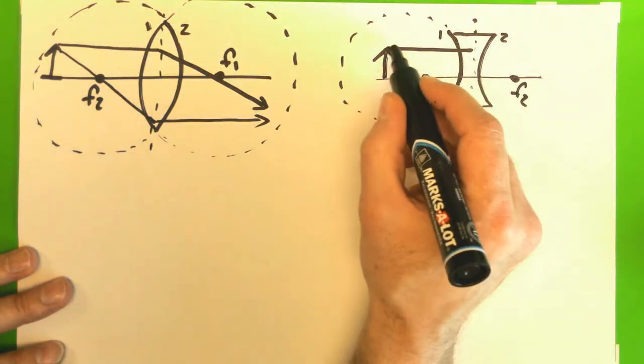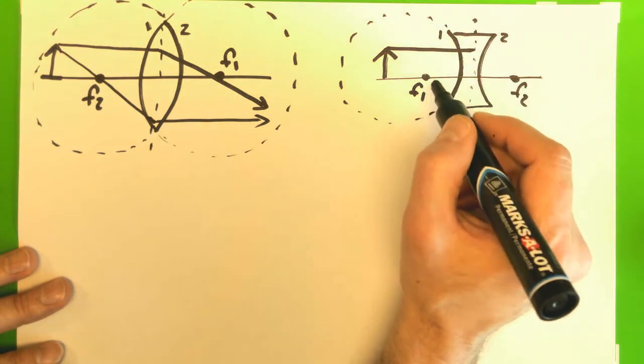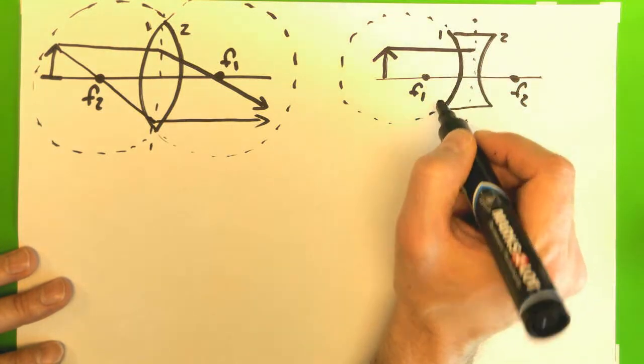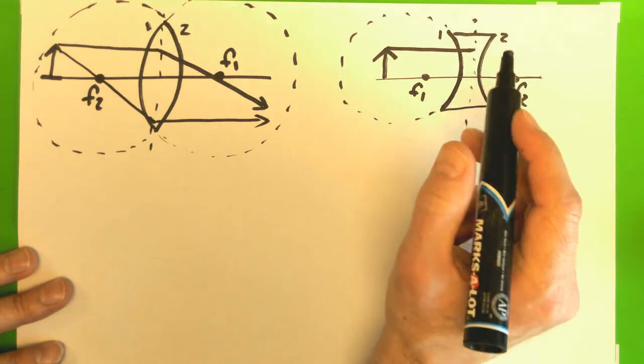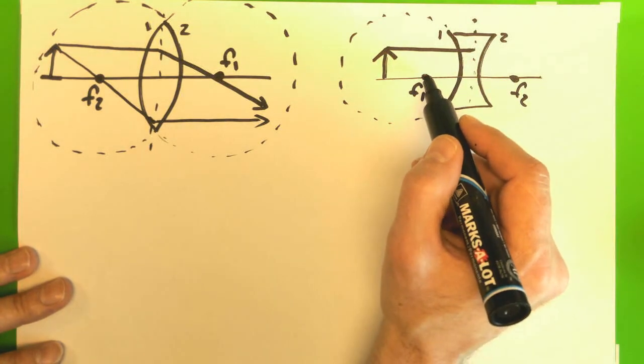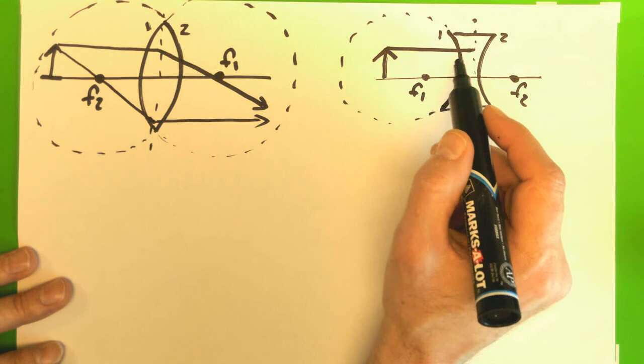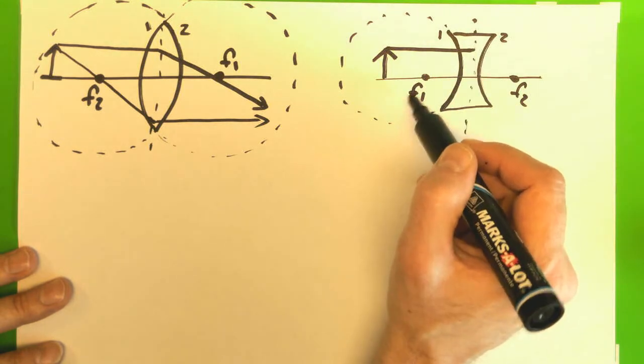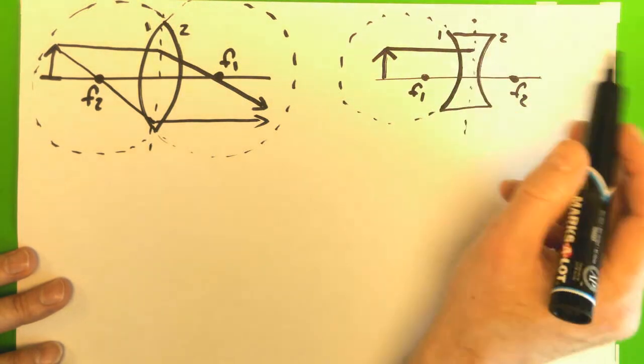So this light ray goes towards this lens and is associated with this focal point because it's the first surface. But it doesn't go through that focal point. The lens isn't a mirror. It doesn't bounce off of it. It's got to go through.